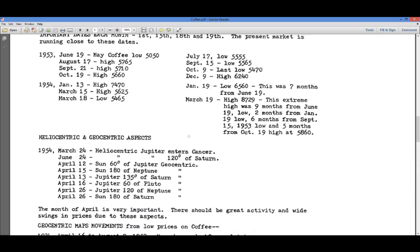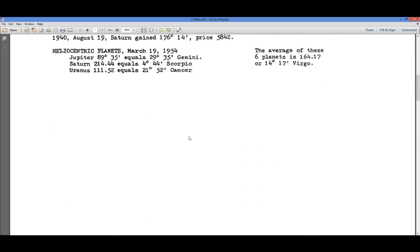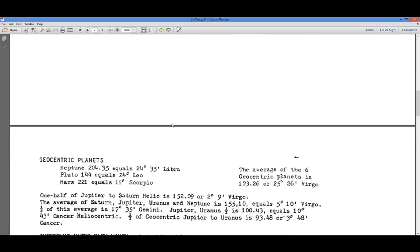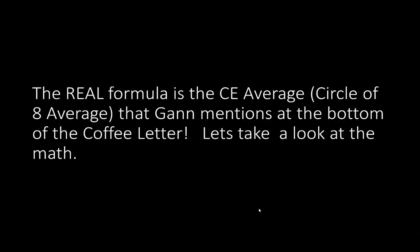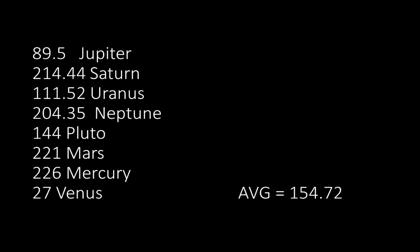He doesn't give it in here. What he does is he wants you to get used to averaging the planets together. Now let's go back and take a look at that CE8 average. The real formula is a circle of eight average. These are the six planets I called off on that day, plus Mercury at 226 and Venus at 27. We simply add them up and divide by eight and we get an average of 154.72. Start plotting this average in your Forex market and see what happens when price gets around it — a very important exercise.